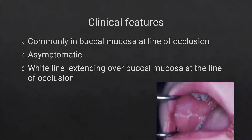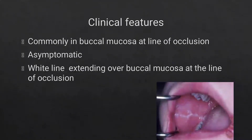Linea alba is commonly found in the buccal mucosa at the line of occlusion. It is asymptomatic — a white line extending over the buccal mucosa at the line of occlusion, as seen in this diagram. As it is asymptomatic, there is no treatment required for linea alba.